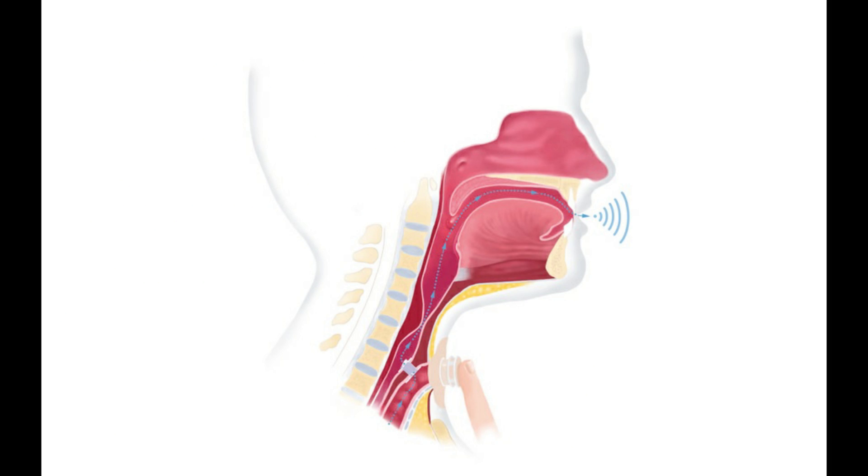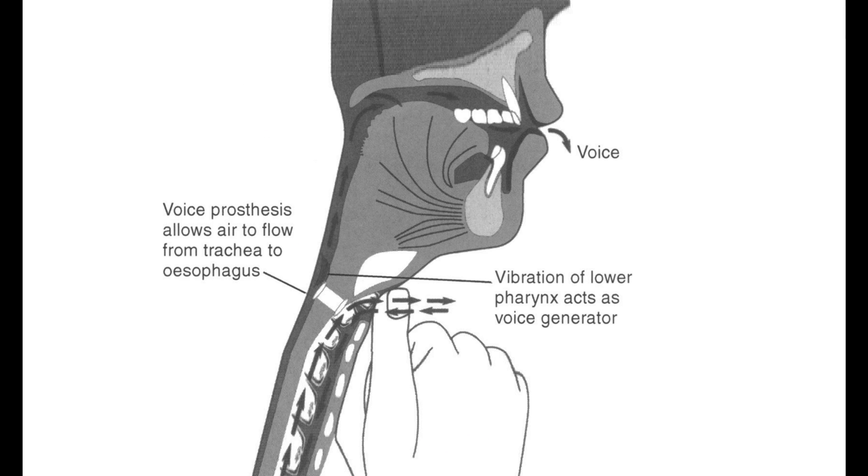During a total laryngectomy surgery, the entire voice box, what we call the larynx, is removed and the windpipe and food pipe are separated from each other, cutting off the connection between mouth and lungs that has a major impact on speaking, swallowing, and breathing functionalities.